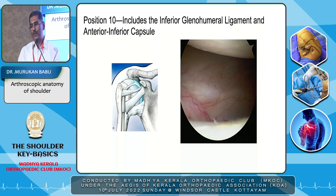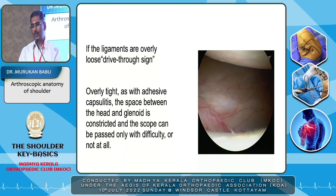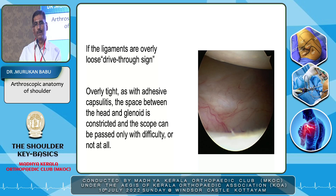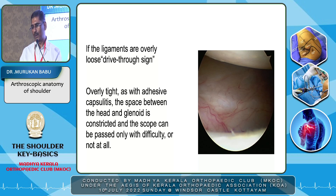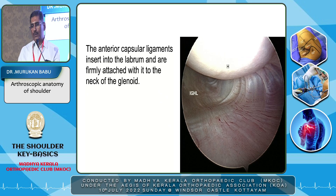The last position includes the inferior glenohumeral ligament and the anteroinferior capsule. The inferior glenohumeral ligament has two parts — the anterior and the inferior band forming the hammock of the inferior part of the articular capsule. If the ligaments are overly lax, you can enter the area called the drive-through sign. If it is tight, as in adhesive capsulitis, it will be very difficult to enter that area and you will need to release the inferior capsule and the IGHL when doing a decompression or arthrolysis in adhesive capsulitis. The anterior capsular ligaments insert into the labrum and are firmly attached with it to the neck of the glenoid.